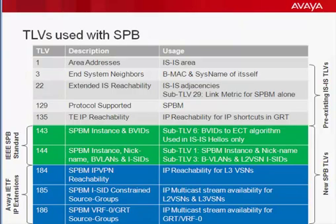This link state database gives Dijkstra knowledge to each and every service point of access within the network and the potential Ethernet switch paths to gain access and pathing through the network. We have three different colors to show the different TLVs. The gray shows the pre-existing TLVs — things like the area address, the end system neighbors, the protocol — all of which we looked at in previous videos.